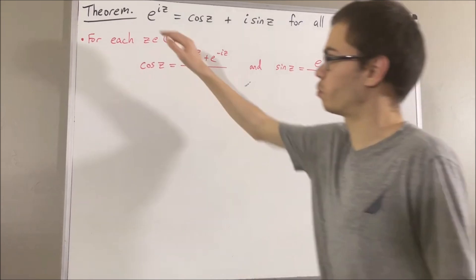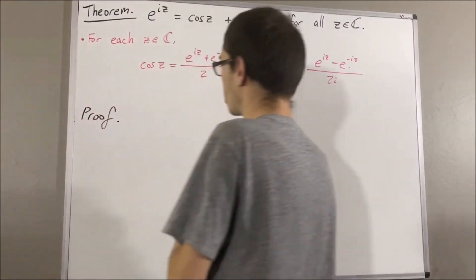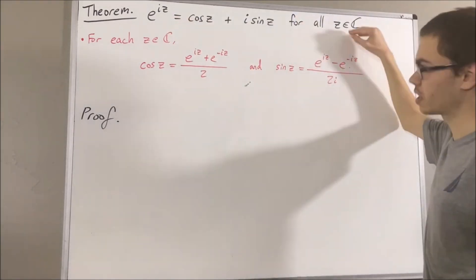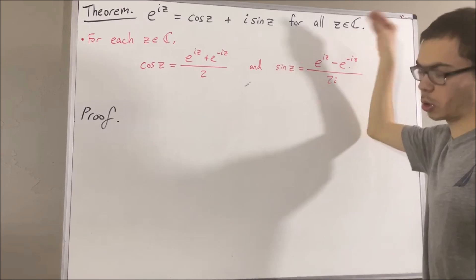Okay, so now let's get into proving this theorem. To start off the proof, since we're trying to prove a statement about all complex numbers, let's give ourselves an arbitrary complex number. Call it z.